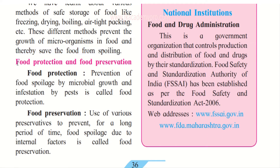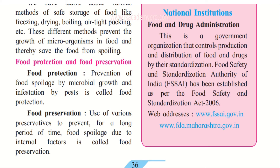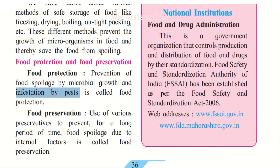Now, food protection and food preservation — what are they? Food protection means prevention of food spoilage by microbial growth, that is, when microorganisms do not attack or infest our food. If the food is not attacked by microbial growth and not infested by pests — small insects or small animals like rats and cockroaches — this is called food protection.